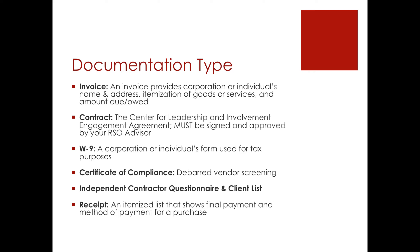A contract — in fact, the Center for Leadership and Involvement Engagement Agreement is linked in the Dig Deeper section of this module, and it must be signed and approved by your RSO advisor within the center. Please note that students may not sign contracts. The W-9 is a corporation or individual's form used for taxing purposes. This may also be found linked in the Dig Deeper section of this module.